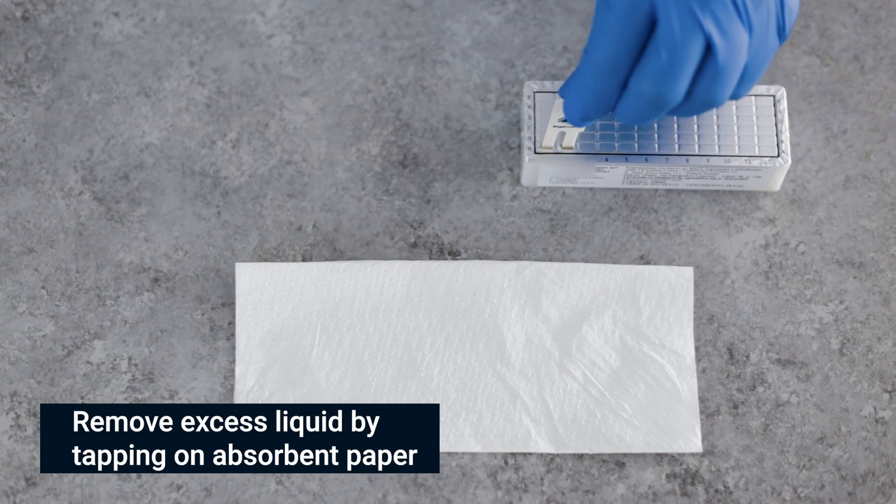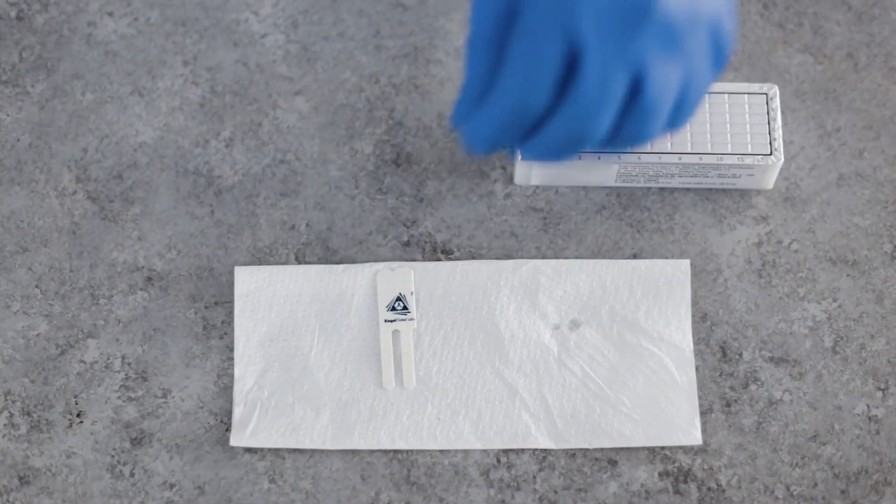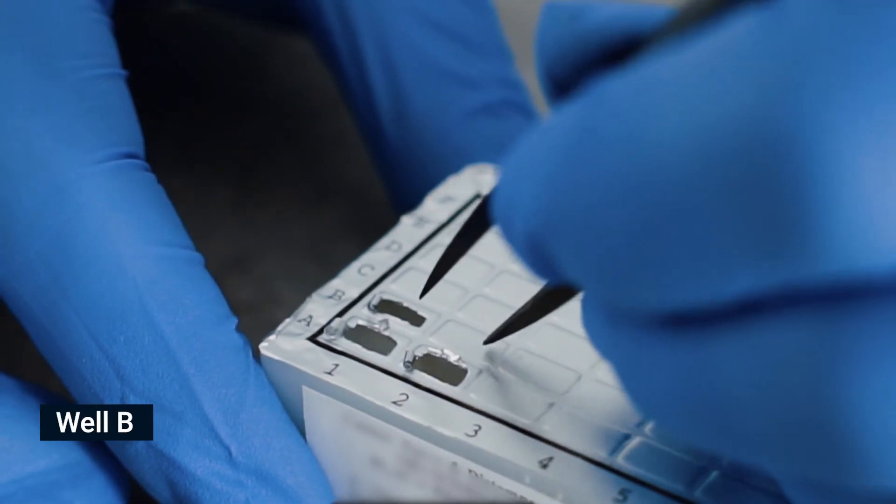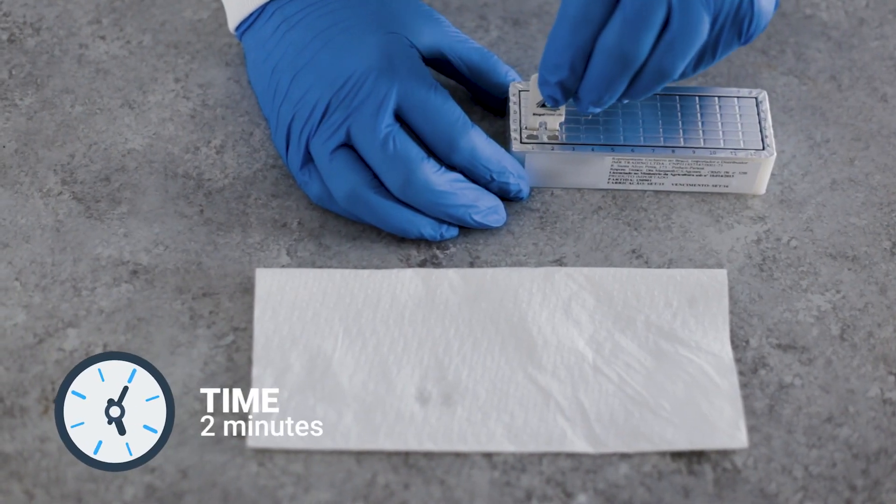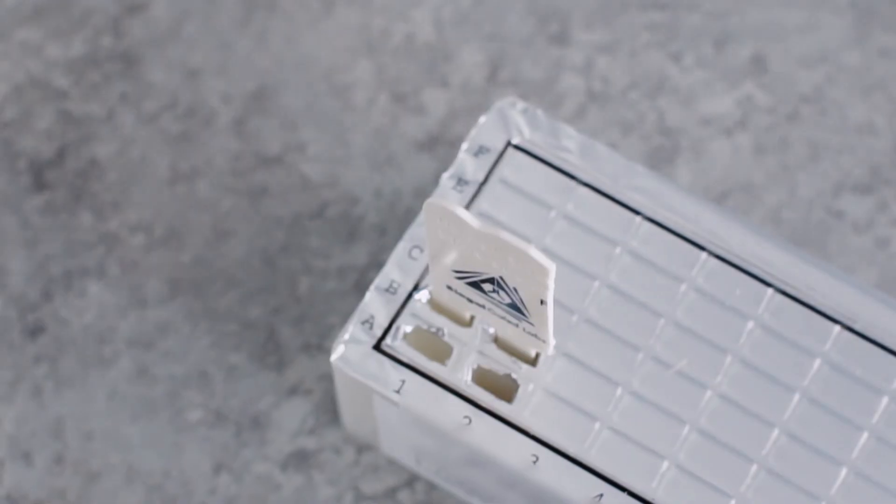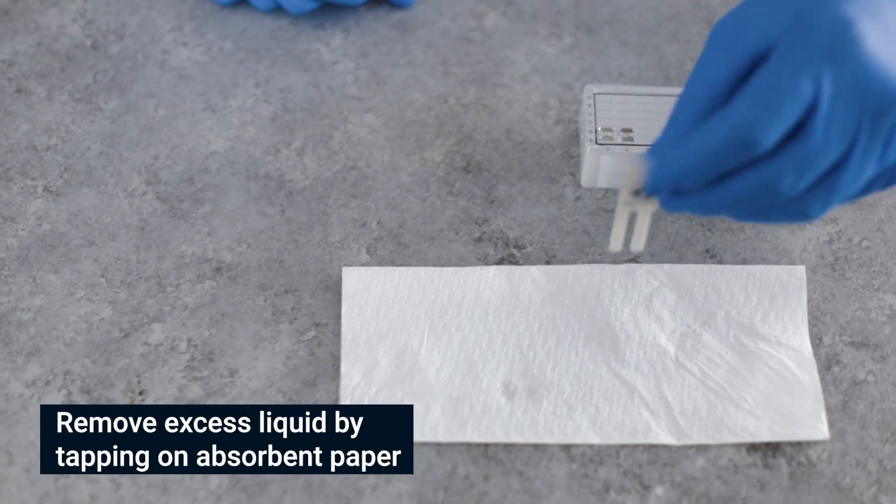Gently shake off excess liquid from comb teeth on absorbent paper before moving to the next row. Pierce the foil of the next wells in row B. Shake off excess liquid and insert the comb for 2 minutes. Move the teeth at least twice during this step, then remove excess liquid.